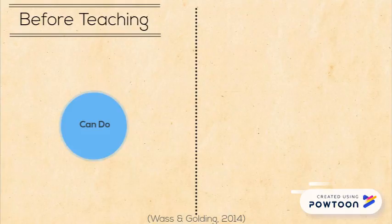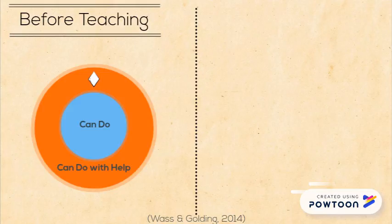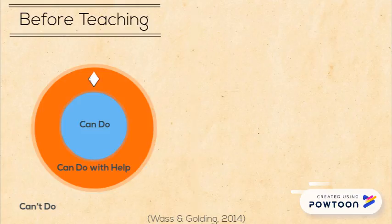Represented in blue is what the student already knows and can do by himself. Represented in orange is what the student can potentially do with the help of someone like a teacher. That's the ZPD.